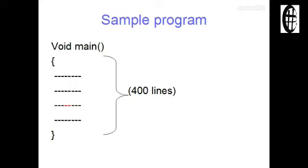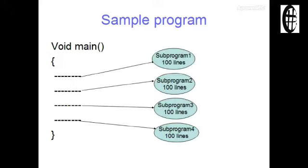For example, if you have a C language program with many lines and there's an error, you need to check the entire program. This requires time and workload. Instead, we can divide the program into subprograms. If we want to check for errors, we only need to check specific functions. This saves time and reduces workload.